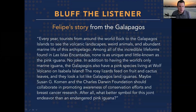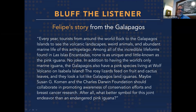Next, Felipe's story from the Galapagos in Ecuador: Every year tourists flock to the Galapagos Islands to see the volcanic landscape, unique animals, and abundant marine life. Among all the incredible life forms found there, not as well known is the pink iguana. In addition to having the world's only marine iguana, the Galapagos also have a pink species living at Wolf Volcano on Isabela Island. The rose-colored lizards feed on cactus fruit and leaves, and look a lot like Galapagos land iguanas. Felipe suggested the Charles Darwin Foundation should collaborate with breast cancer research organizations, since what better symbol than an endangered pink iguana.